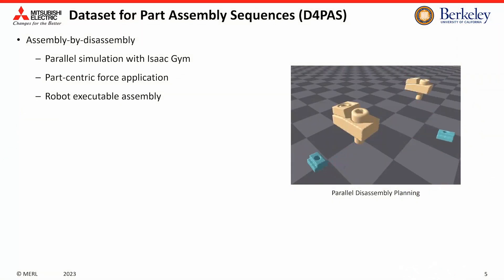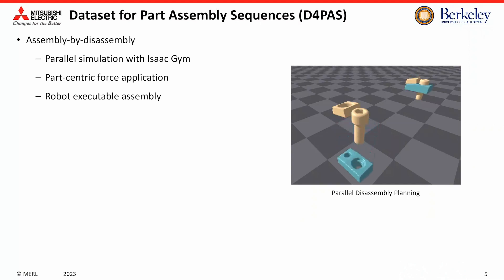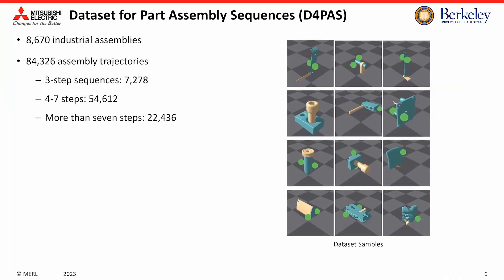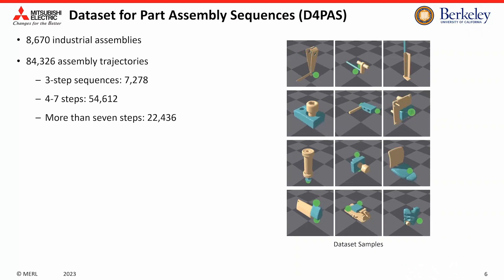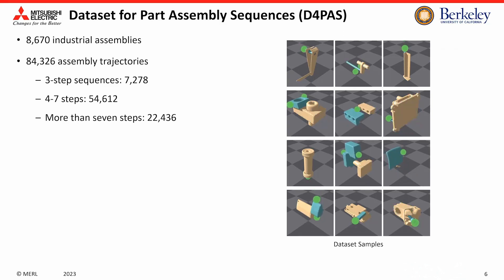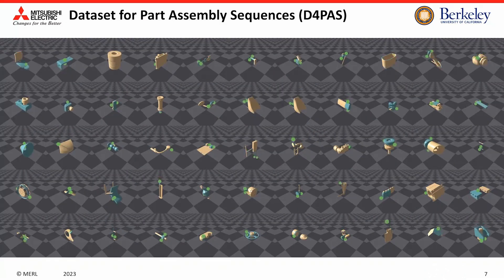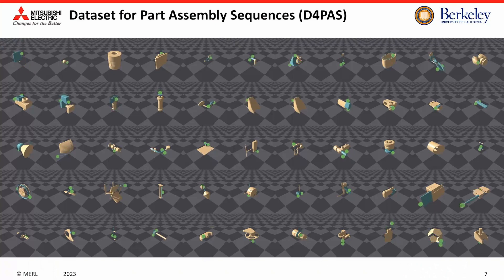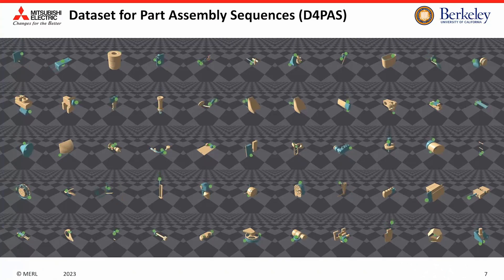To train the PAST model, we provide a dataset for part assembly sequences. The assembly dataset is generated by reversing the disassembly process — it tries to remove parts from the assembly by applying dragging forces, simulated using a physical simulation. A few samples from the dataset are shown on the right side. The blue part indicates the moving part, the yellow represents the stationary part, and green spheres represent feasible contact points. The dataset contains over 8,000 industrial assemblies and over 80,000 assembly trajectories and sequences.